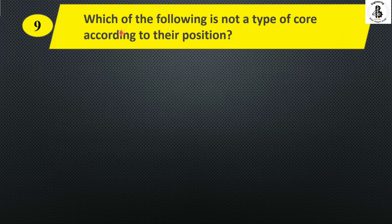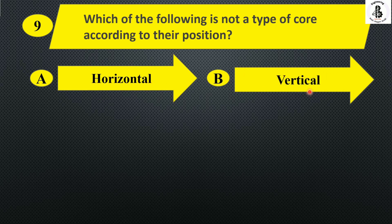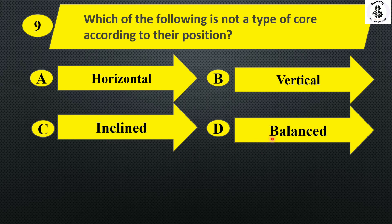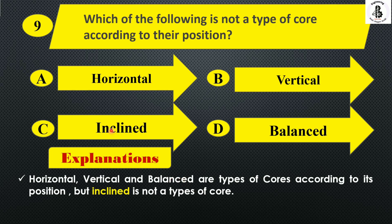Which of the following is not a type of core according to their position? Option A horizontal, option B vertical, option C inclined, and option D balance. From the classifications of cores with respect to positions, horizontal, vertical, and balance are all valid types — along with key cores, hanging cores, and others. But inclined is not a type of core by position. So the answer is option C.